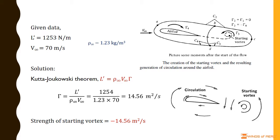At standard sea level, the density ρ∞ is 1.23 kilograms per cubic meter. Now, substitute those values into the equation and simplify. We get Γ is 14.56 square meters per second.